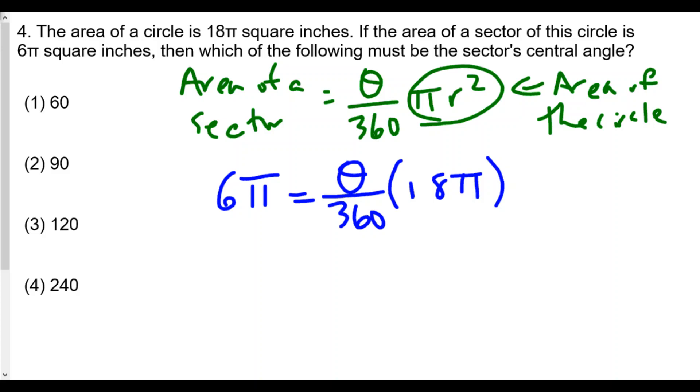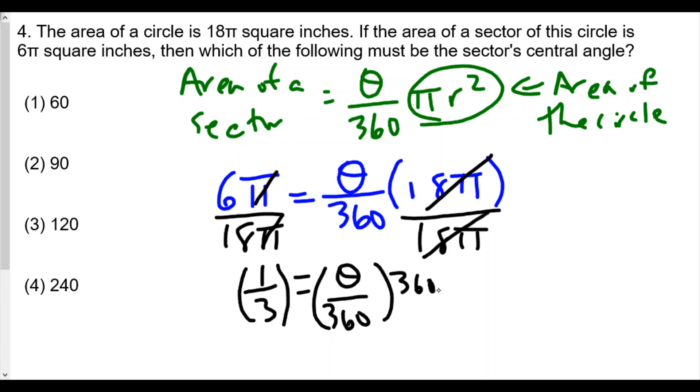So we're going to divide both sides by 18π. The nice thing is that the 18π divides out here, and the π divides on the left side, leaving us with really 6 over 18, or 1/3. So 1/3 equals theta over 360. And if we multiply both sides by 360 degrees to get theta by itself, we find out that theta is equal to 1/3 of 360, or 120 degrees. And so the answer for number 4 will be 120 degrees. That's the measure of the central angle.